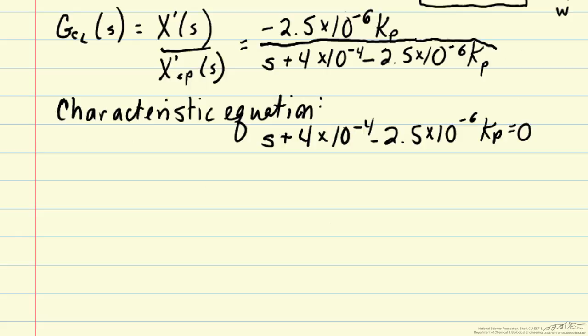It turns out that the closed loop system will be unstable if the real part of s is greater than zero. This is a general result, but we can calculate it for our particular system by solving for s.